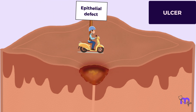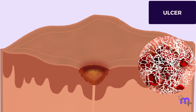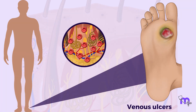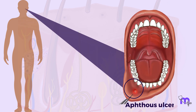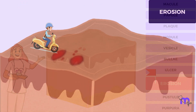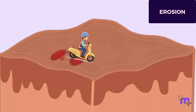Next is an ulcer, which is well circumscribed and depressed, with an epithelial defect covered by a fibrin clot, resulting in a yellow-white appearance. Venous ulcers typically develop on the leg due to poor blood circulation. An aphthous ulcer occurs in the oral cavity.